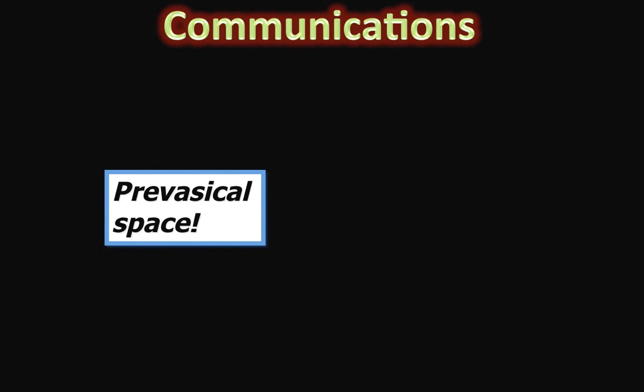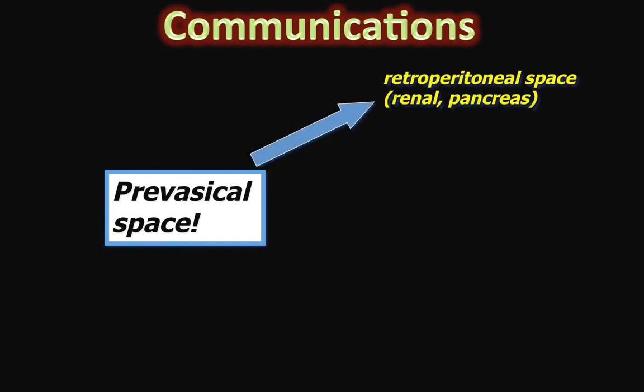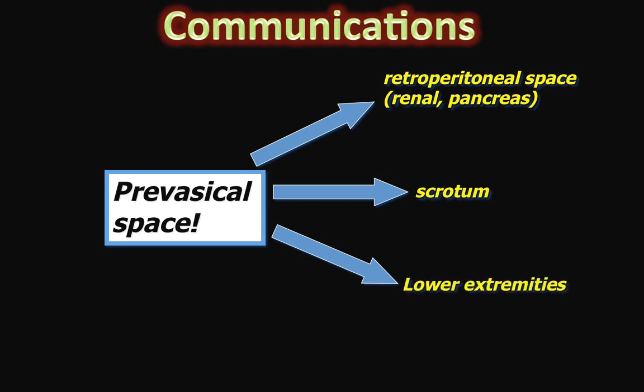Our concentration is going to be on the pre-vesicle space which has several important communications. It might communicate with the retroperitoneal space—these are the spaces above that surround the kidneys and pancreas. It could also communicate with the scrotum through the inguinal canal. Fluid in the pre-vesicle space might extend into the lower extremities via the femoral sheath, or the anterior abdominal wall might have direct involvement by extension through the rectus sheath.